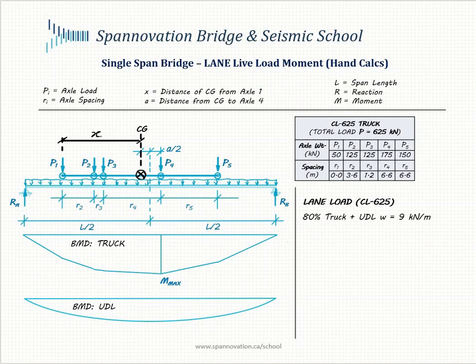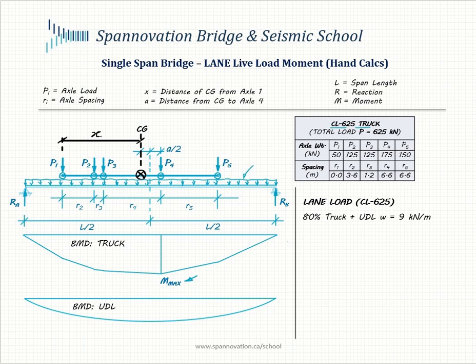In this tutorial we'll determine the live load moment on a single span bridge due to lane loading through hand calculations. This builds on the previous tutorial where we calculated the maximum moment due to a truck. The CL625 truck has axles P1 through P5 at spacings R2 through R5. For lane loading, in addition to the truck, the Canadian code prescribes a uniformly distributed load W of 9 kN/m.